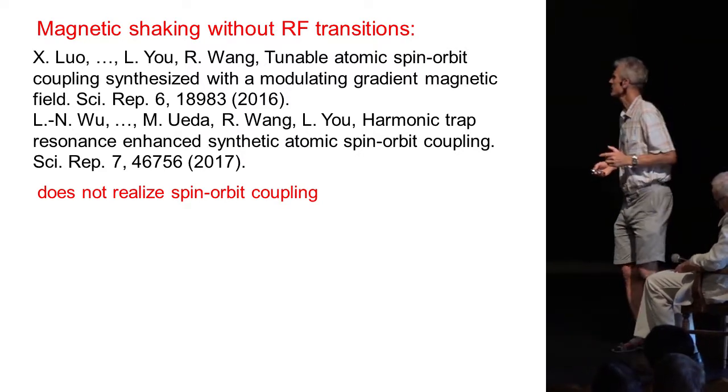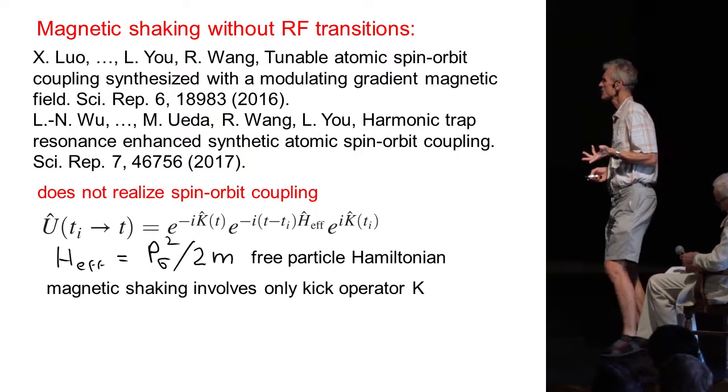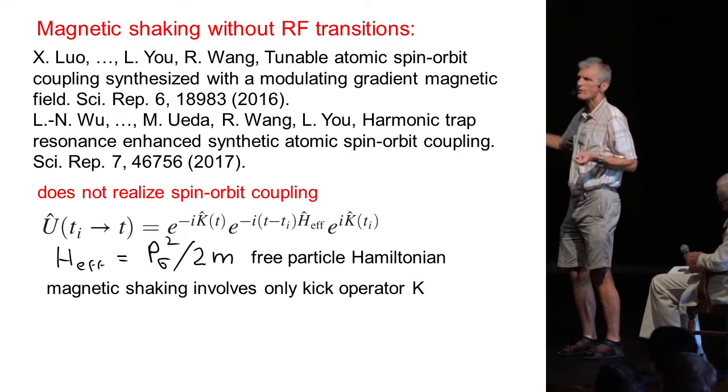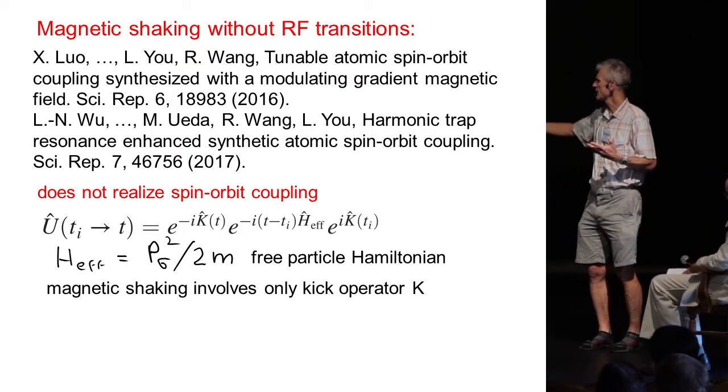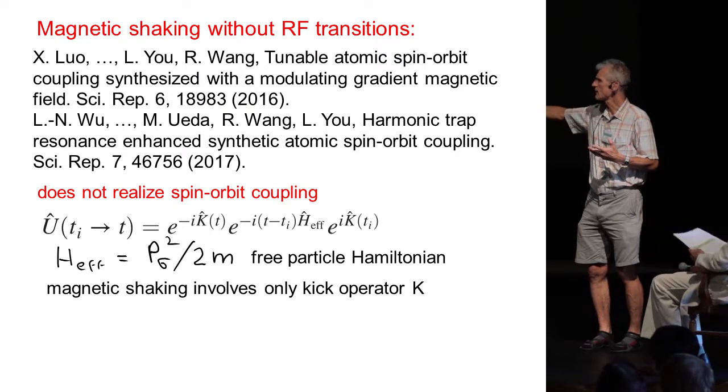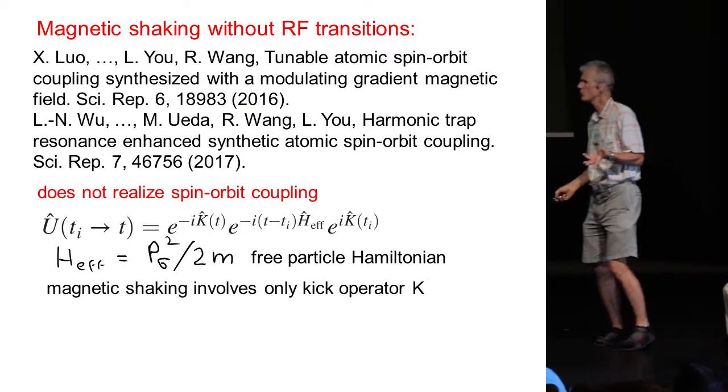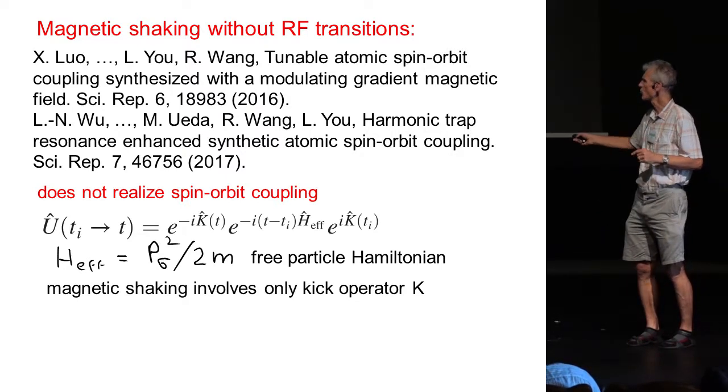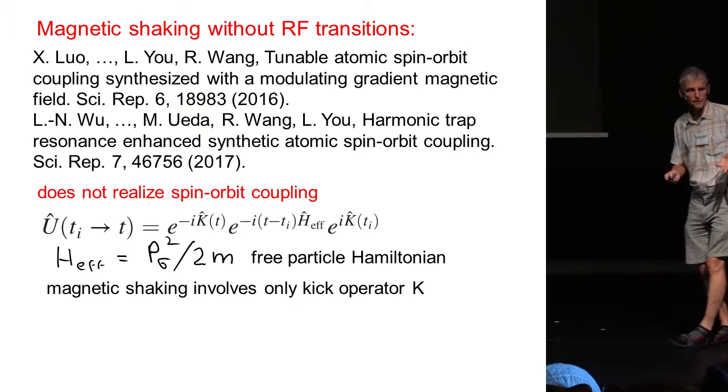My interpretation is that this is actually highly ambiguous, because if you use the framework with the time evolution operator, pure magnetic shaking is not modifying the effective Hamiltonian. The effective Hamiltonian is the free particle Hamiltonian, and pure magnetic shaking is only creating a kick operator or micromotion operator.